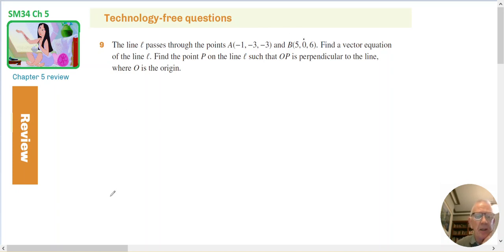So this is my line, and it passes through the point A, which is negative 1, negative 3, negative 3, and passes through B, which is 5, 0, 6.